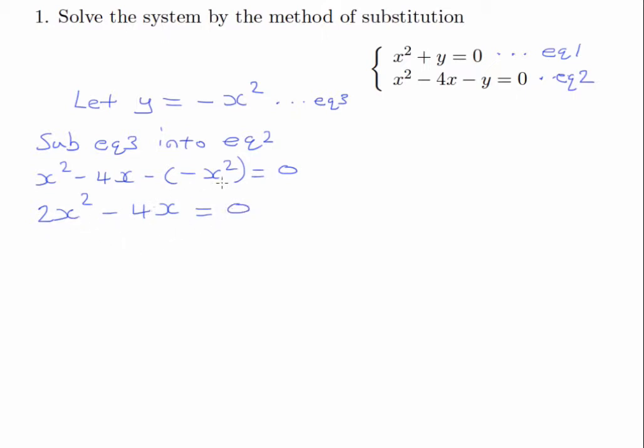You can bring this on this side, that will give us 2x squared is equal to 4x. These x's can cancel, and that gives us 2x is equal to 4, therefore x will be equal to 2.